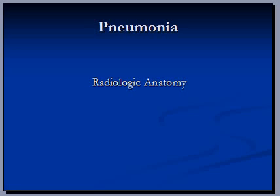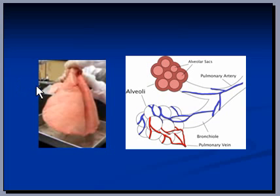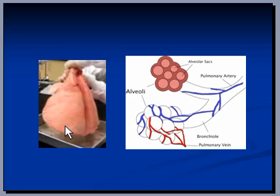We will be learning about pneumonia, so it is important for us to understand radiologic anatomy. This is how lungs look like in a photograph — conical, pinkish, spongy, inflatable organs. They are made up of millions of sac-like structures known as alveoli.